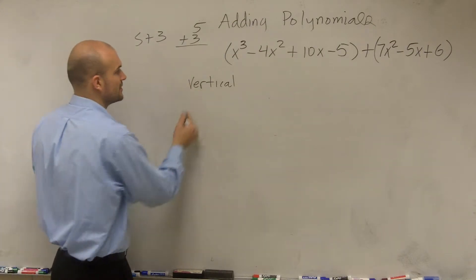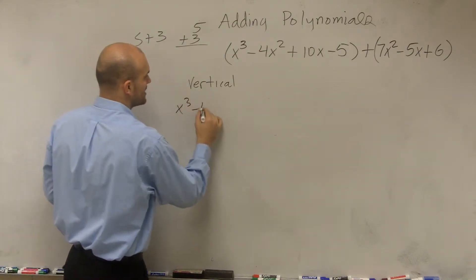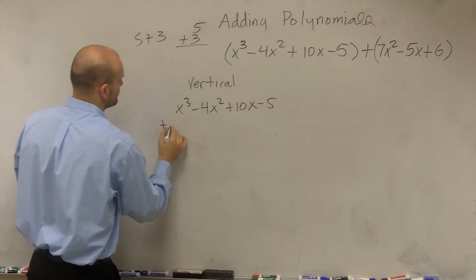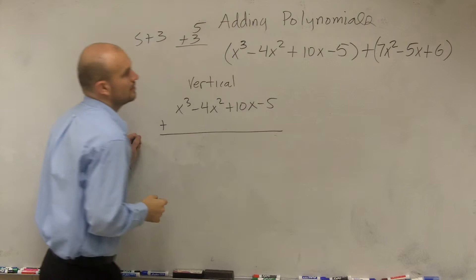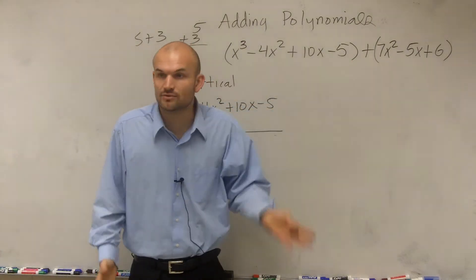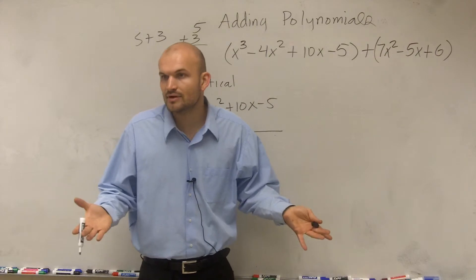So we have x³ - 4x² + 10x - 5 plus... Now, what we're going to do when we arrange these, you want to make sure that you only arrange the ones that have common variable factors.